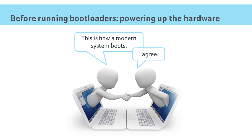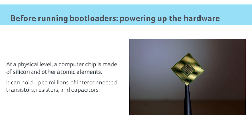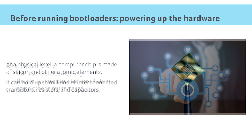Let's dissect what happens when we feed electricity to a modern chip. When powered off, a computer chip is just an expensive combination of silicon glass sprinkled with other atomic elements to form transistors and other electronic components, interconnected with an extremely complex network of metal tracks and wires.